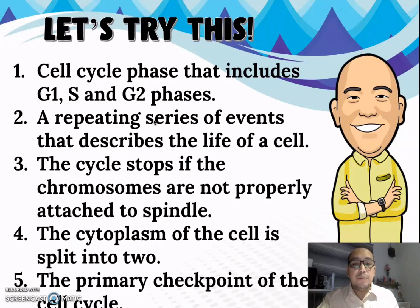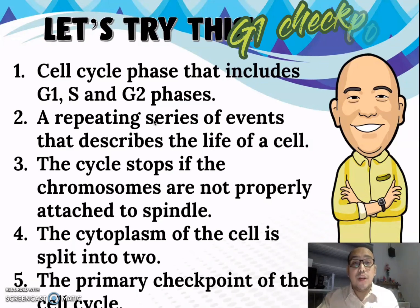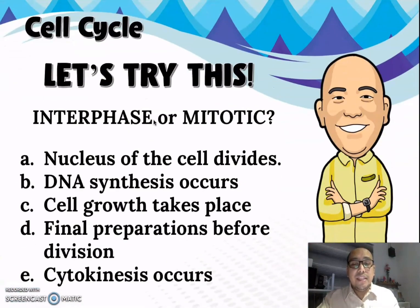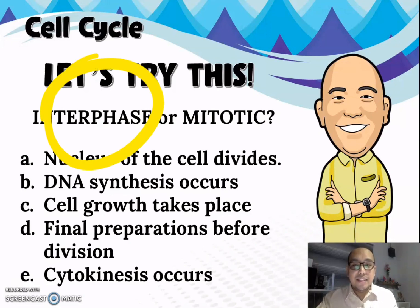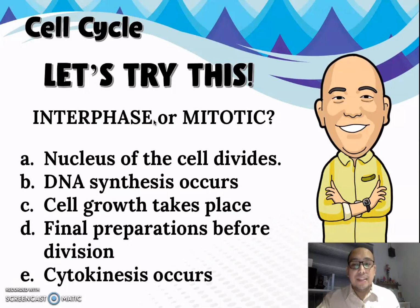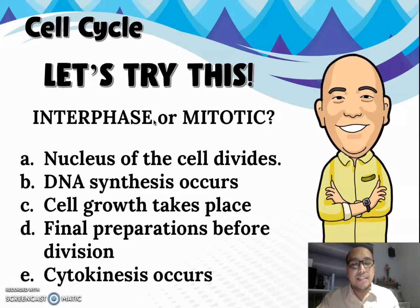Number four: the cytoplasm of the cell is split into two — that is cytokinesis. Number five: the primary checkpoint of the cell cycle — that is the G1 checkpoint. For the next activity, identify whether the following occur in interphase or the mitotic phase. A: nucleus of the cell divides — mitotic phase. B: DNA synthesis occurs — interphase. C: cell growth takes place — interphase. D: final preparations before cell division — interphase. E: cytokinesis occurs — mitotic phase.